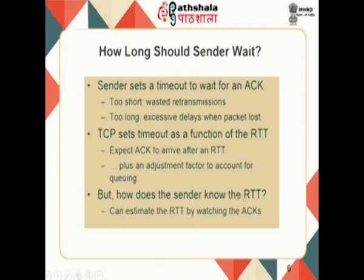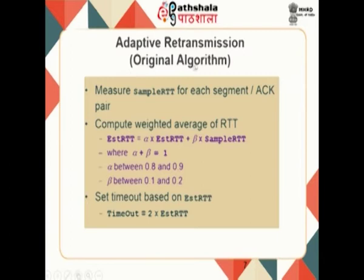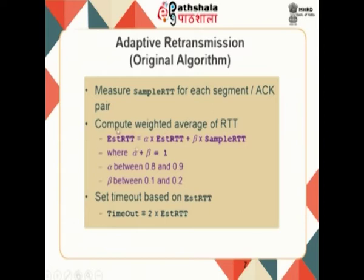The next question is how the sender knows the RTT, since it can vary depending on network characteristics — less congestion means lower RTT, more congestion means higher RTT. TCP gets an estimate of the RTT by watching the ACKs and measuring them. For every segment–ACK pair, you record the time the segment was sent and the time the ACK was received; the difference is your sample RTT. You keep taking samples and compute a weighted average, called the estimated RTT.